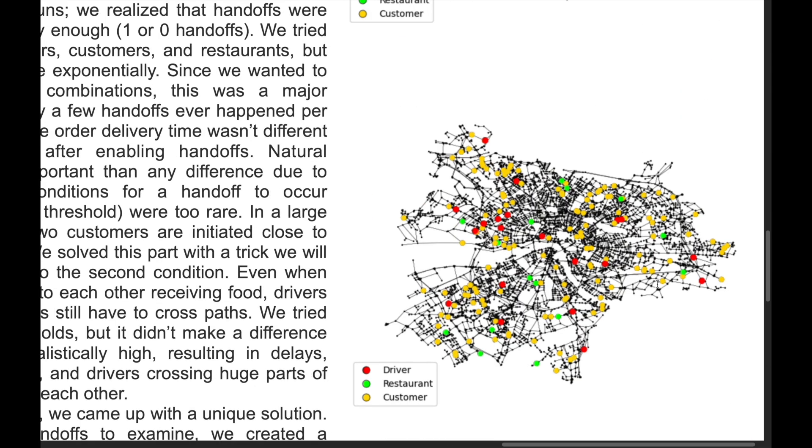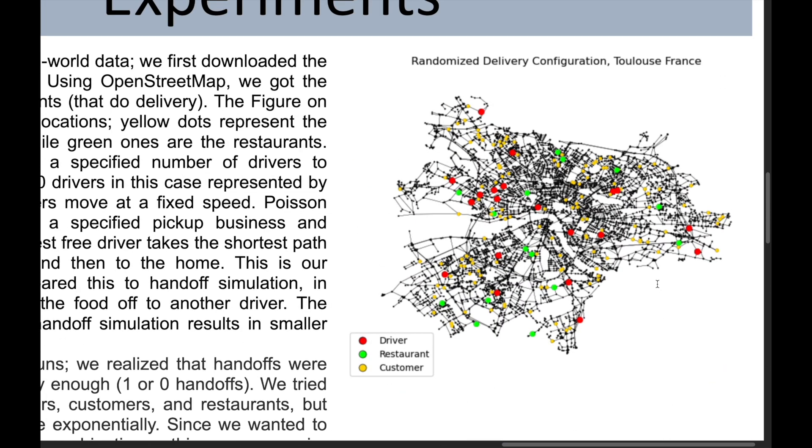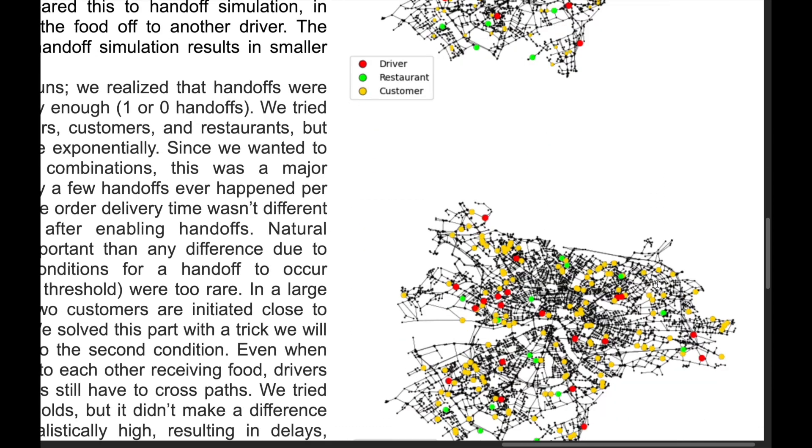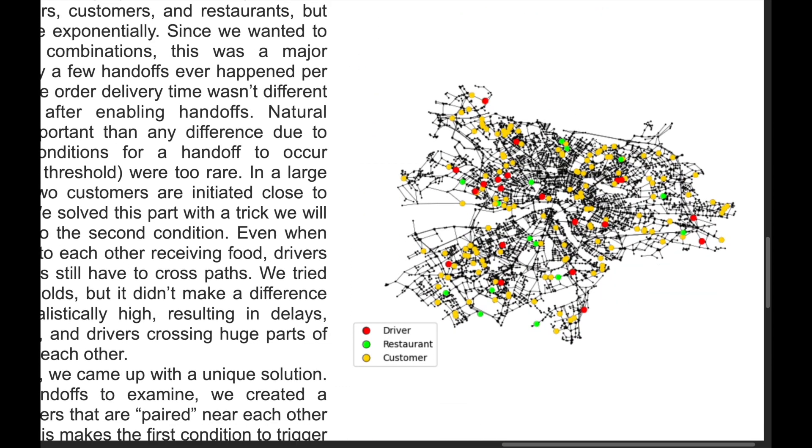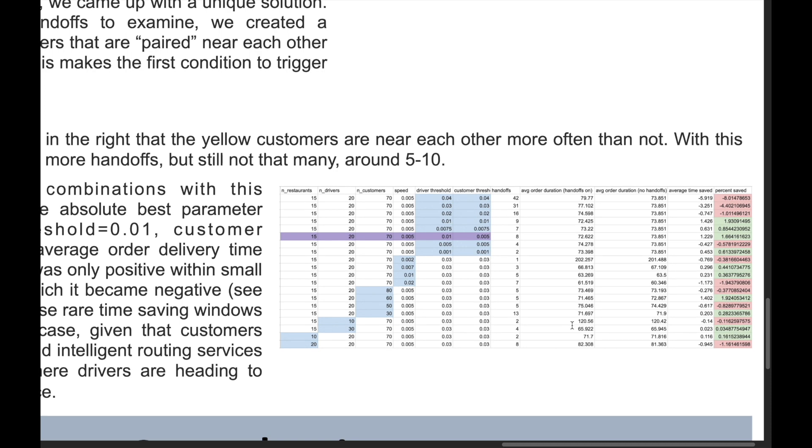To really accelerate handoff frequency, we decided to test an idealized case, where customer locations were paired next to each other at the beginning, instead of being random. We started witnessing more handoffs for all parameter combinations and some small parameter windows where the average delivery time did go down.